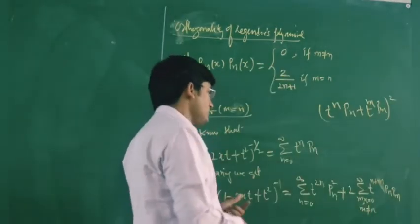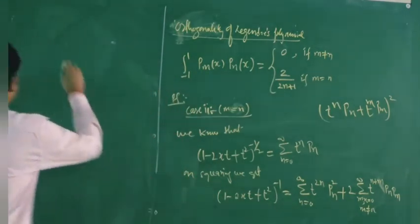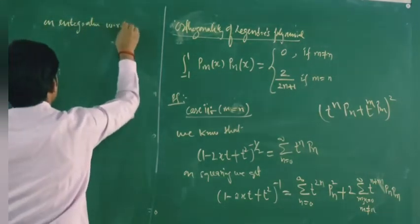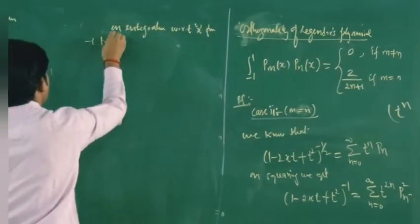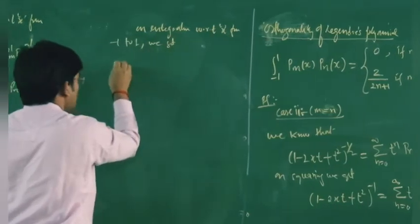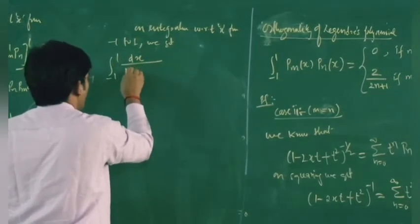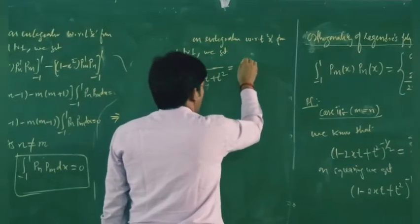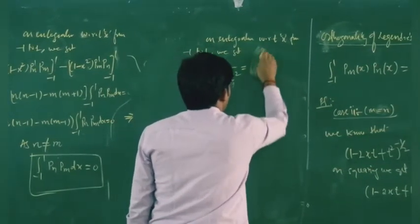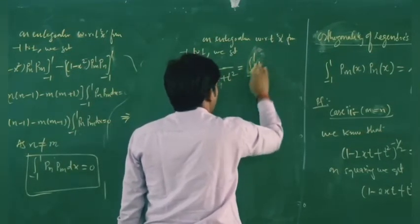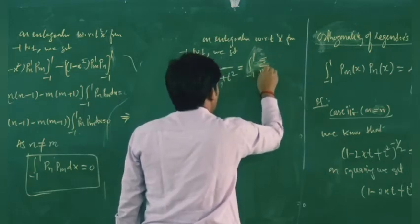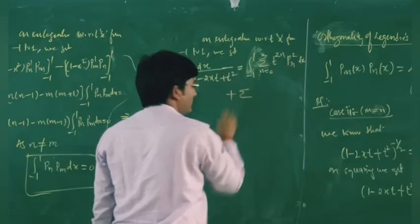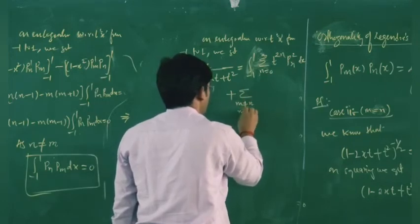Let us integrate this equation with respect to x from minus 1 to plus 1. On integration, the left-hand side is the integral from minus 1 to 1 of (1 - 2xt + t²)^(-1) dx. After term-by-term integration on the right-hand side, the cross terms (m ≠ n) integrate to zero by the first part of the proof, leaving only the summation over n of t^(2n) times the integral from minus 1 to 1 of P_n² dx.